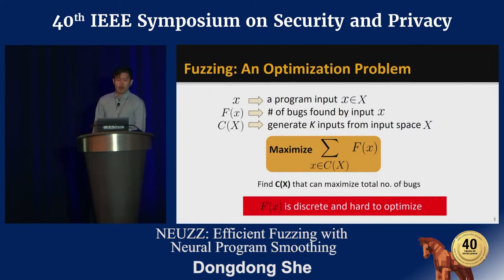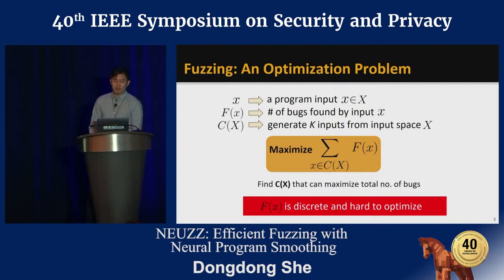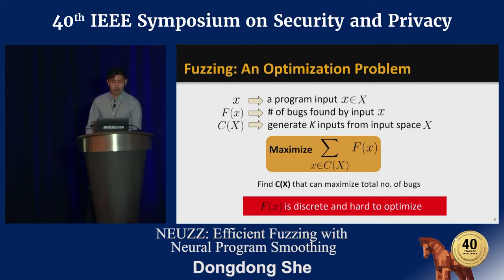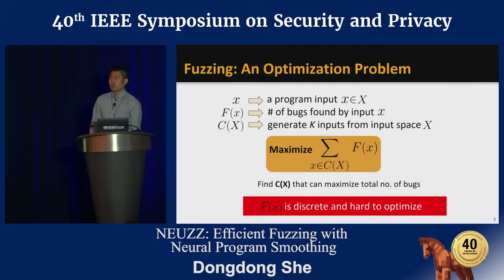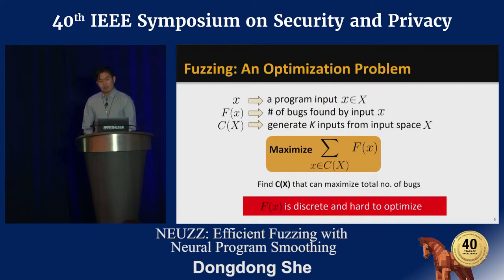Capital X represents our possible input space. Lowercase x indicates a program input and f(x) denotes the number of bugs yielded by execution of a specified input. C(x) is a sample function to generate key inputs restricted by the fuzzing budget from input space. A fuzzing campaign often has a resource limit such as time budget and computation budget, so it can only generate a fixed number of mutations within this budget. The aim of this optimization is to find a set of inputs which uncover the maximum number of bugs within the fixed resource budget.